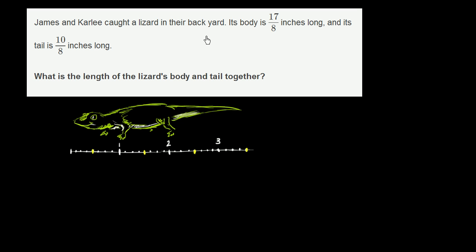James and Carly caught a lizard in their backyard. Its body is 17 eighths inches long, and its tail is 10 eighths inches long. What is the length of the lizard's body and tail together?